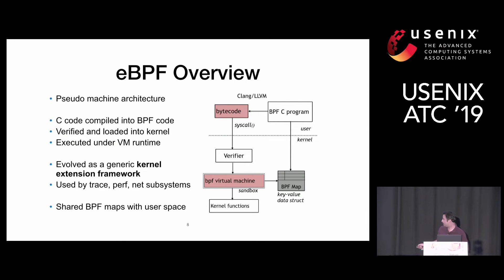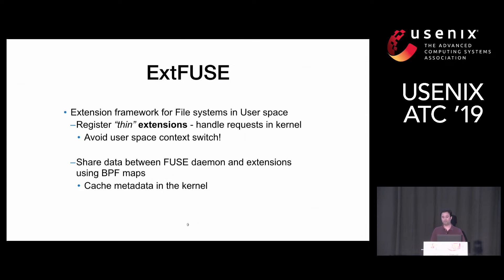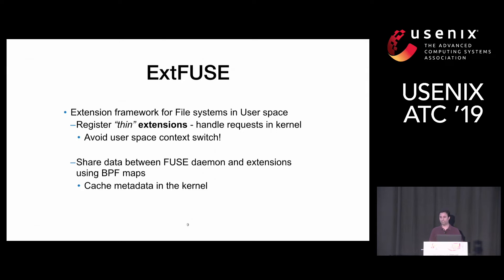Another feature of EBPF is that it enables sharing between user space applications and kernel code using maps. Maps are data structures that host arbitrary key-value pairs, and they are shared between user space and kernel. Using EBPF, we are proposing an extension framework called EXT-Fuse for Fuse file systems. With EBPF, Fuse file systems can register thin custom handlers in the kernel — called extensions — to serve requests in the kernel without context switching to user space. Extensions are safely executed under the BPF virtual machine runtime, and we leverage EBPF maps to share data or metadata between the Fuse daemon and the handlers in the kernel.